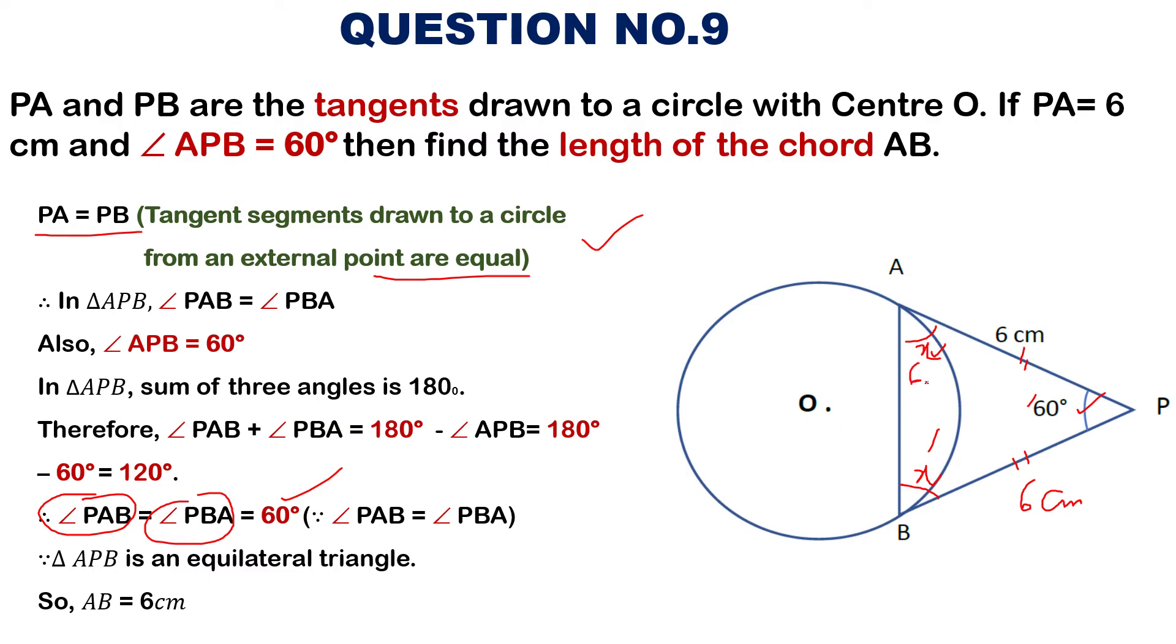It means each angle is 60 degree. So, finally, this triangle ABP will be an equilateral triangle. If it is an equilateral triangle, what will be AB? It will also be 6 centimeter.